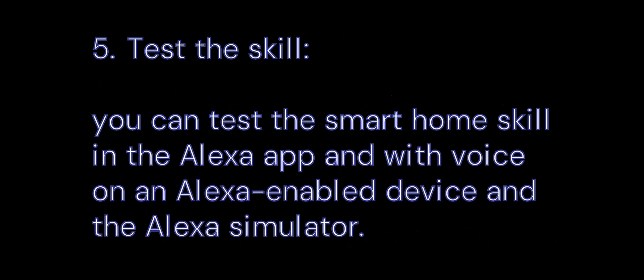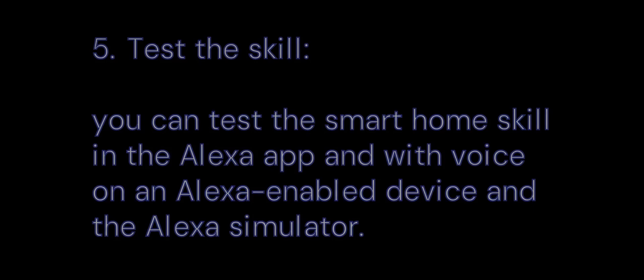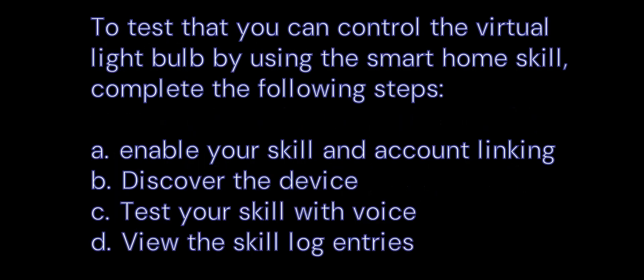Now, in this final Step 5: Test the skill. You can test the Smart Home skill in the Alexa app and with voice on an Alexa-enabled device and the Alexa simulator. To test that you can control the virtual light bulb by using the Smart Home skill, complete the following steps: A, Enable your skill and account linking. B, Discover the device. C, Test your skill with voice. D, View the skill log entries.